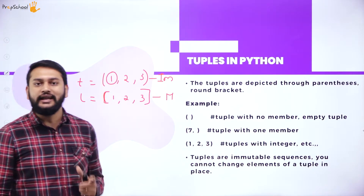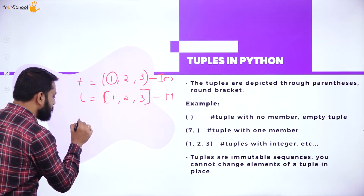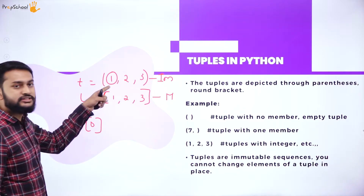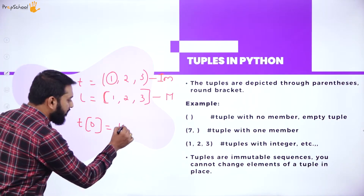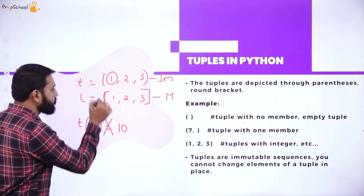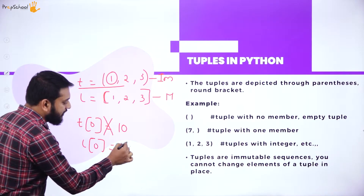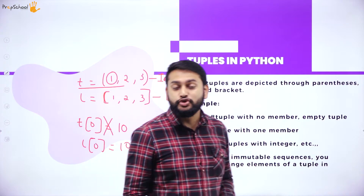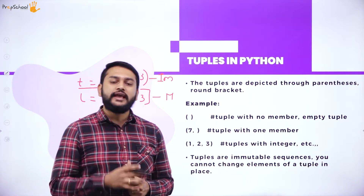Immutable means you cannot replace a value using its index. For example, if I want to replace the value at index zero — say replace 1 with 10 — that is not possible with tuples. But you can do that with a list. This is what I call mutable for lists and immutable for tuples.